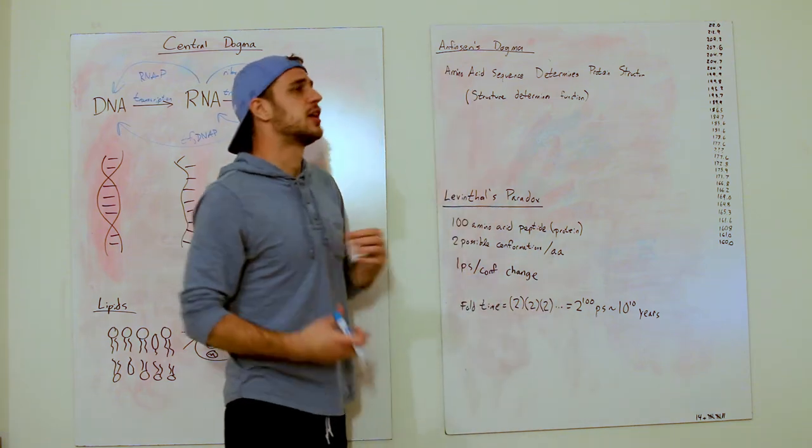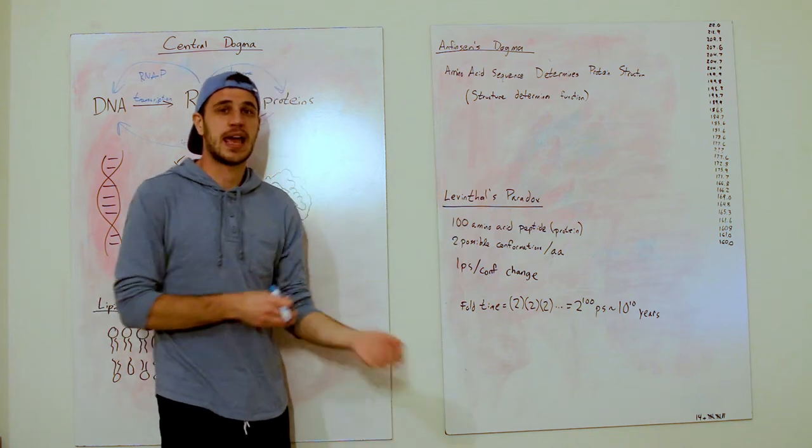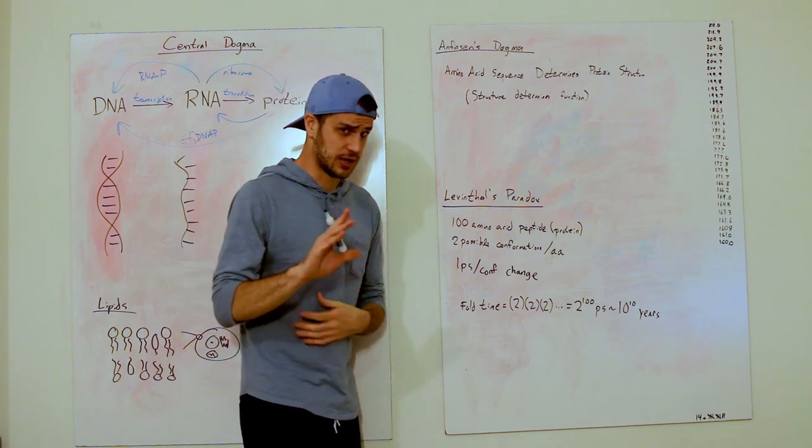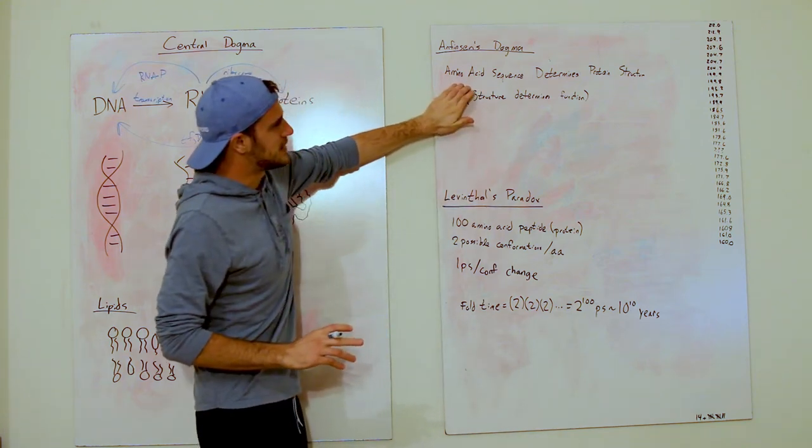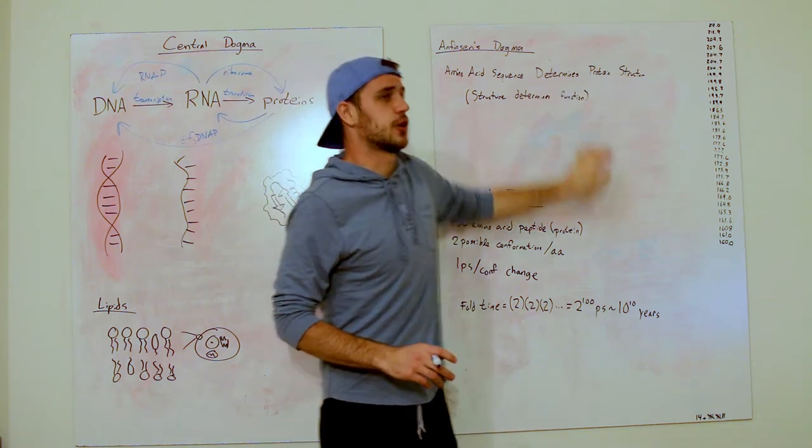So Anfinsen's Dogma is named after this guy named Anfinsen, believe it or not, who actually received a Nobel Prize for this work. And you're going to question why real shortly. It states: amino acid sequence determines protein structure, and structure determines the function.